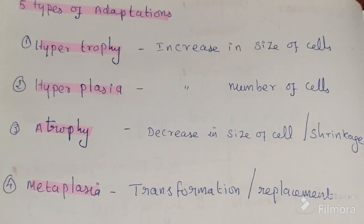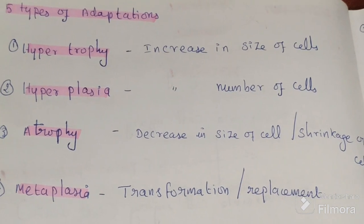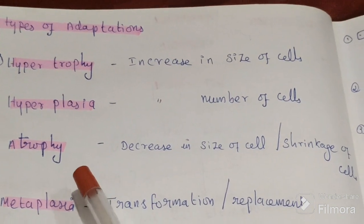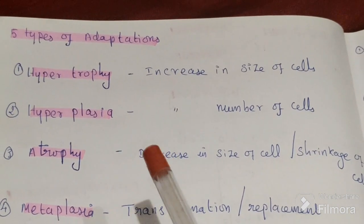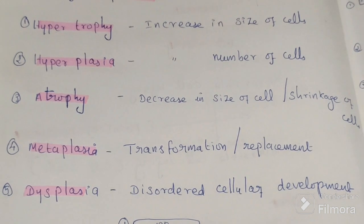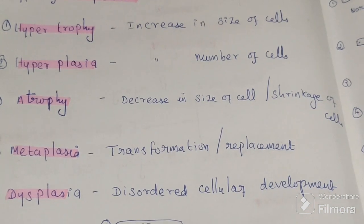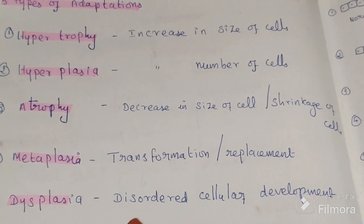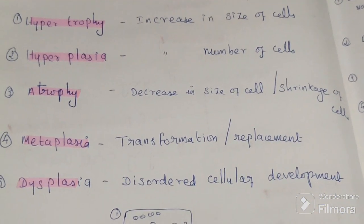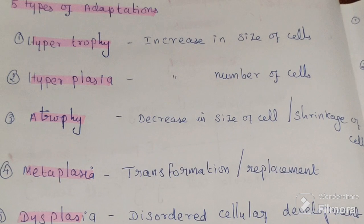The five types of cellular adaptation are: hypertrophy — an increase in cell size; hyperplasia — an increase in cell number; atrophy — a decrease in cell size and number, or shrinkage; metaplasia — transformation or replacement where one adult cell type is converted into another; and dysplasia — disordered cellular development.